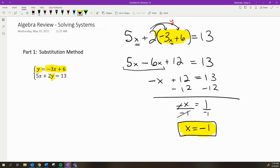You can use either equation, but this one is easier because it says y = -3x + 6. I just replaced x with the value I solved for: -1.